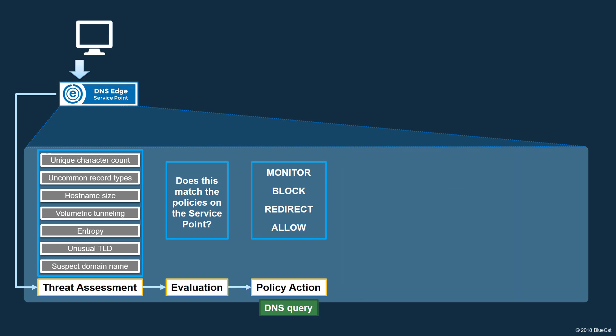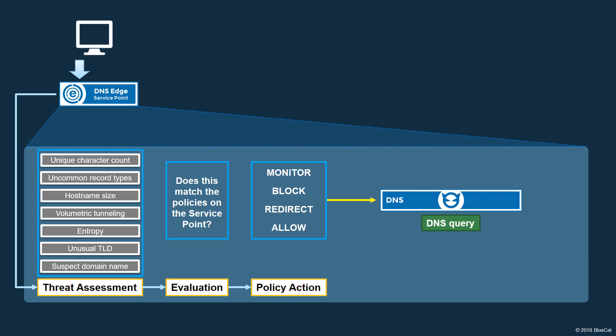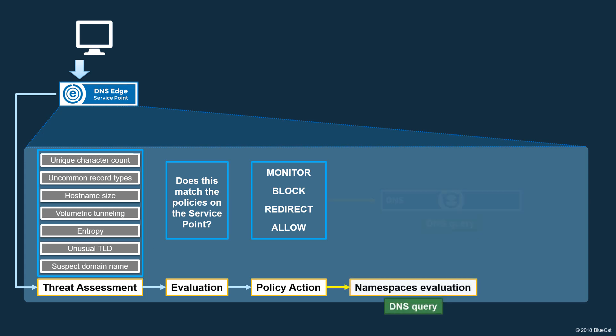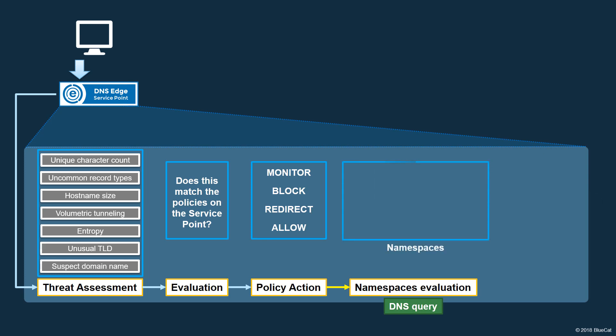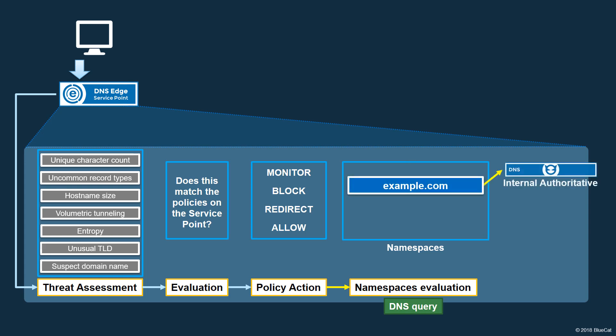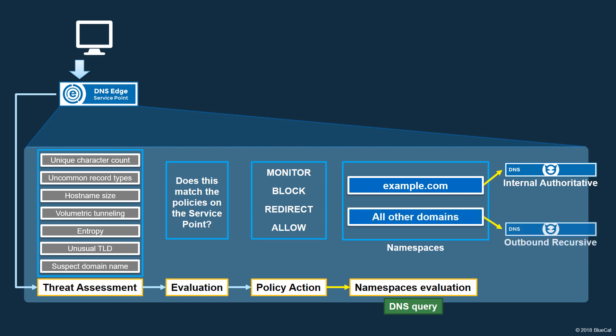If the query is not blocked or redirected, then the Service Point forwards the query to the address of one or more defined DNS forwarders. DNS Edge provides additional intelligence and flexibility to the caching layer with the namespaces feature. Each namespace includes a unique set of DNS forwarders to which a query might be directed. Service Points can be configured with one, two, or three different namespaces. Using namespaces, a Service Point routes queries to the appropriate DNS servers based on where the query should be sent. For example, an administrator for Example Corporation can route all queries for internal resources in the corporate domain example.com to one or more authoritative internal servers, and all other queries to an external recursive server.